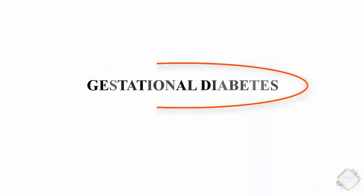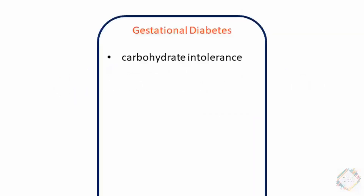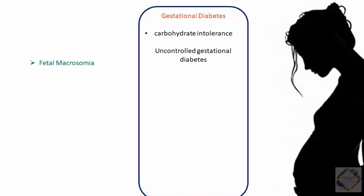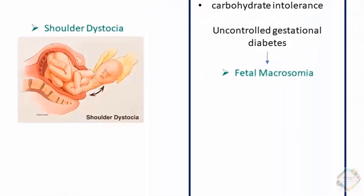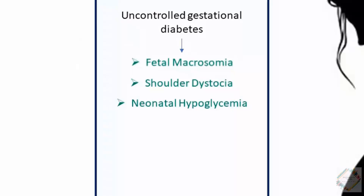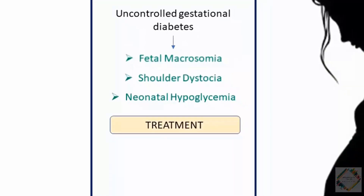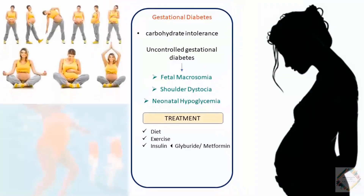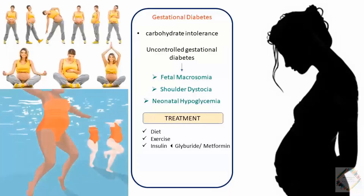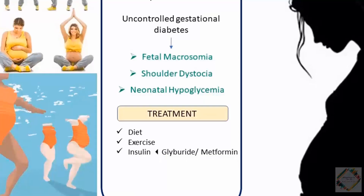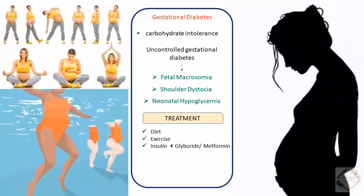Gestational Diabetes is defined as carbohydrate intolerance with onset or first recognition during pregnancy, primarily affecting pregnant women. Uncontrolled gestational diabetes can lead to fetal macrosomia (abnormally large body), shoulder dystocia (difficulty in delivery), and neonatal hypoglycemia. Common treatment strategies include dietary control, exercise such as swimming, cycling, aerobic exercises, and yoga, along with insulin administration. Glyburide and metformin may also be reasonable alternatives to insulin therapy.